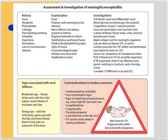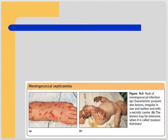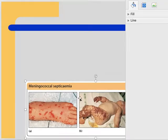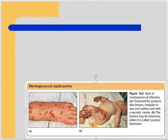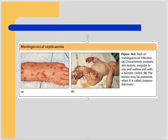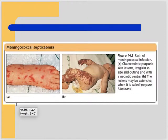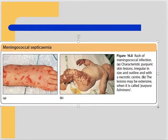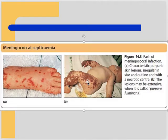Meningococcal septicemia: a child presented with rash, loss of consciousness, and fever. The rash is non-blanchable - when you compress it, the rash stays and does not become skin-colored, even under pressure. We do a glass test, placing a glass over the rash to see if it changes color. If it doesn't blanch, this is a very serious sign.